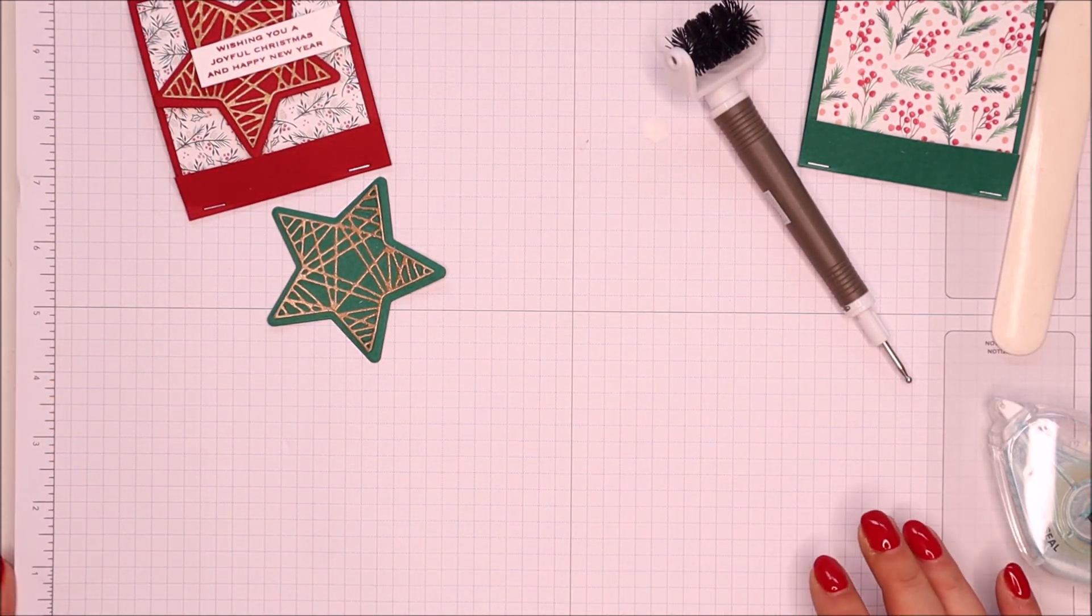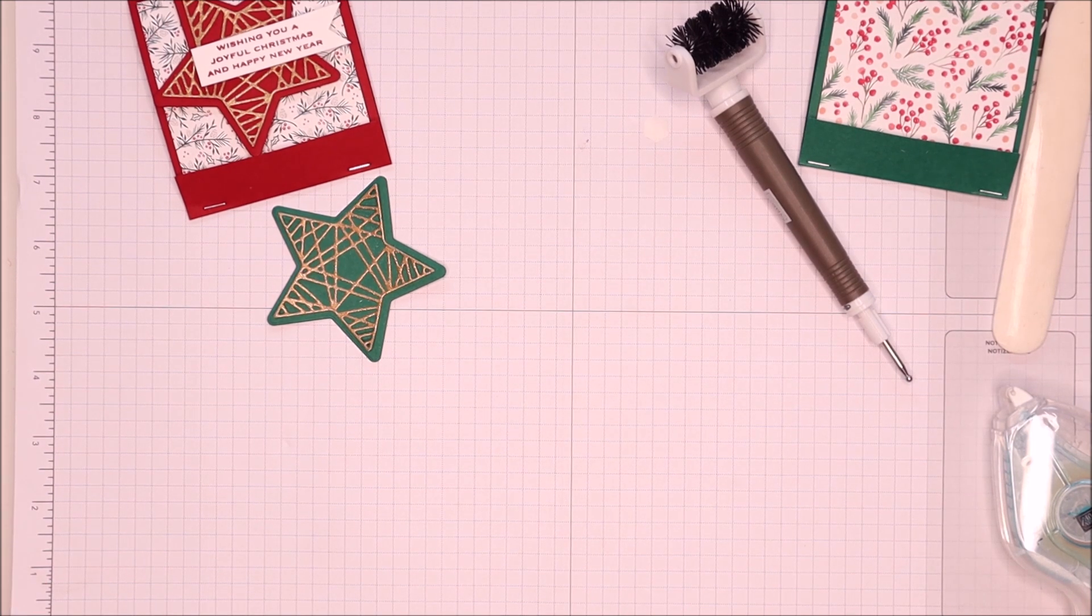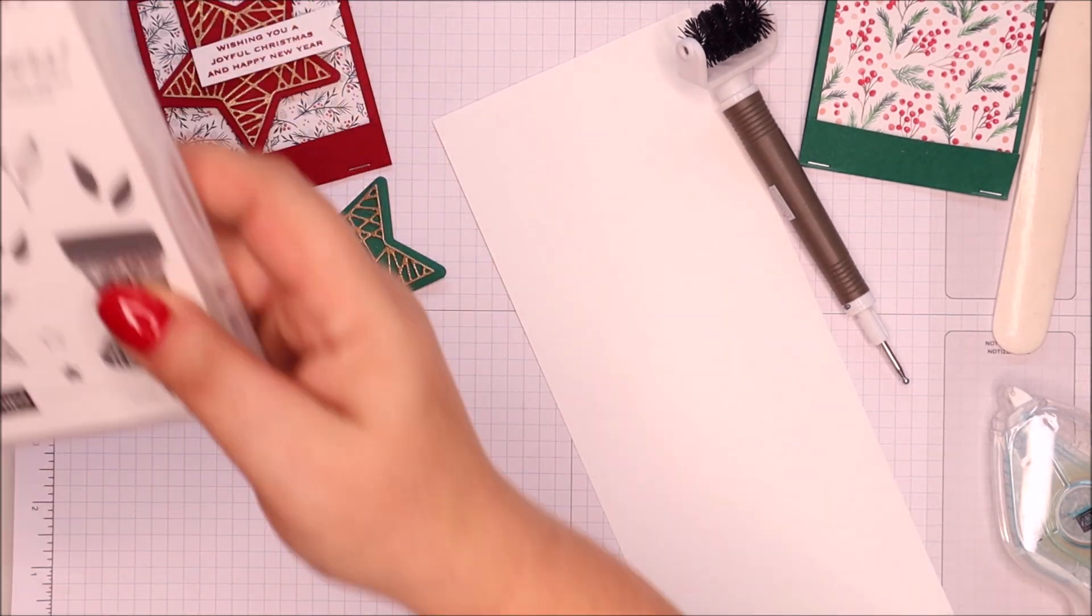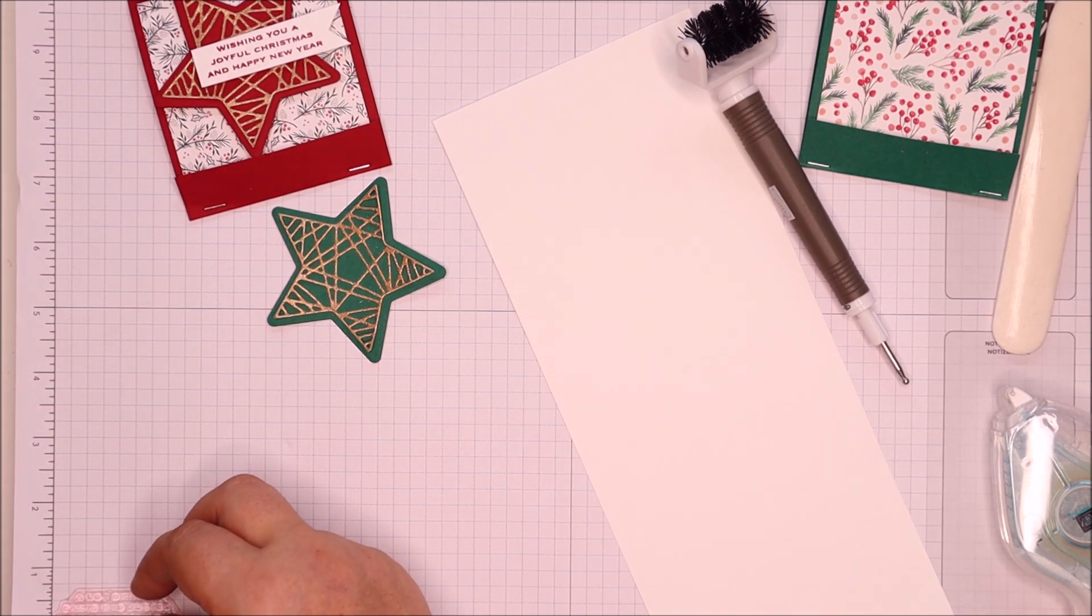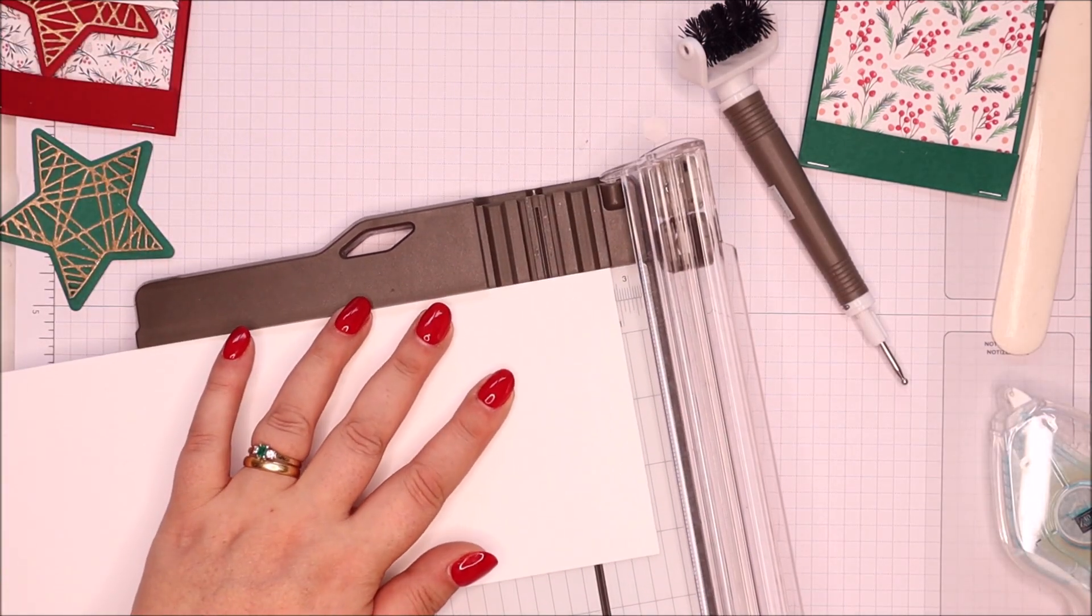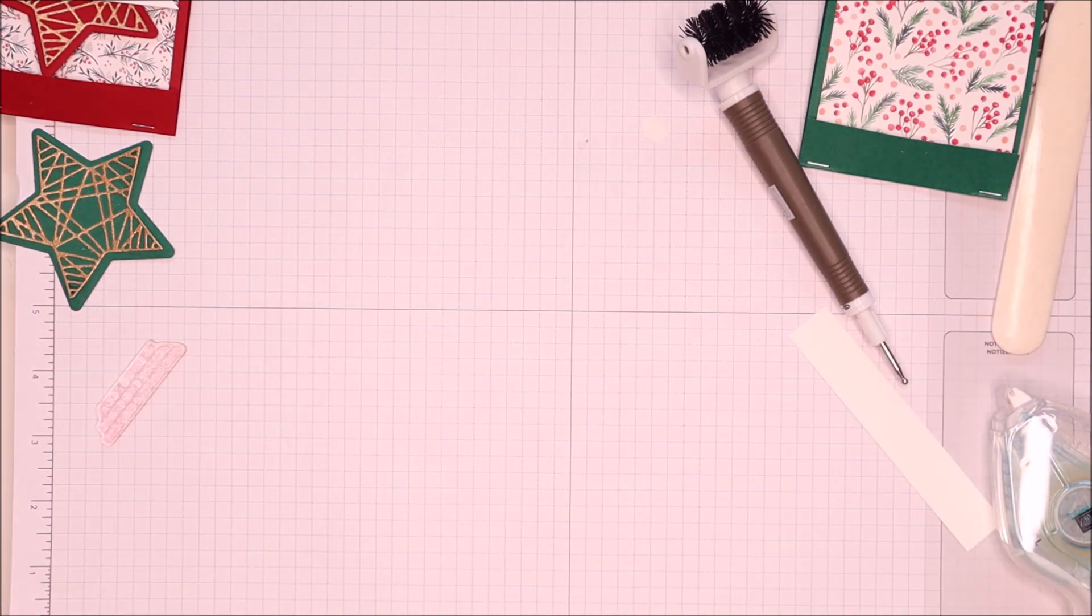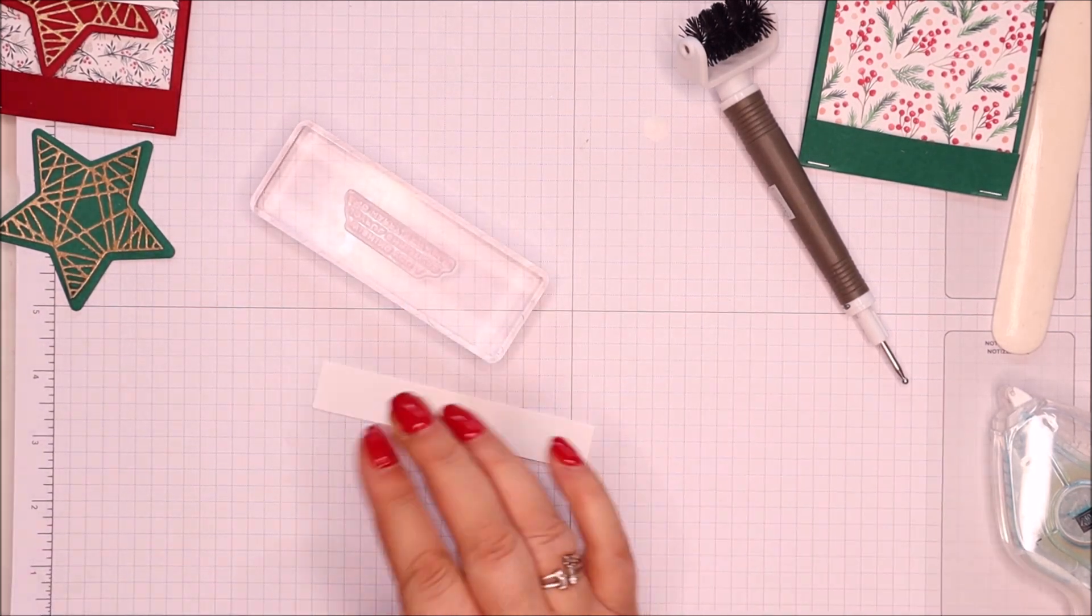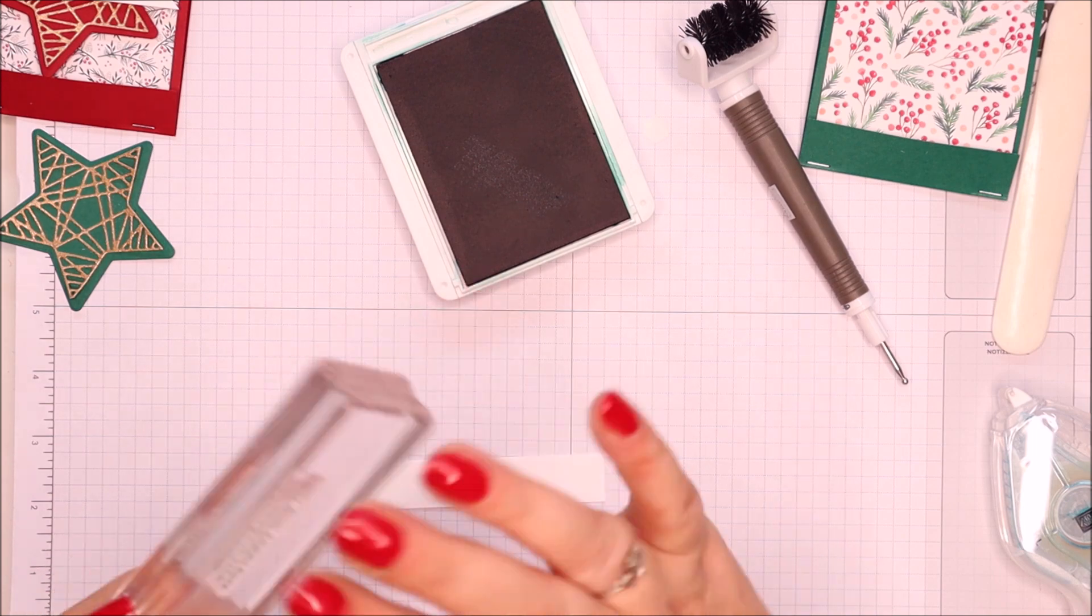Okay. Let's find a bit of whisper white. Have I got a bit of, I thought I had a bit of whisper white. What have I done with it? I don't know. Let's get some from the scraps that have been behind me. Not exactly a scrap, but that's okay. Okay. Wishing you a joyful Christmas and a happy new year. What a nice thing to say to somebody. And this measures up at three quarters of an inch. So I'm just going to trim my whisper white down to three quarters of an inch.